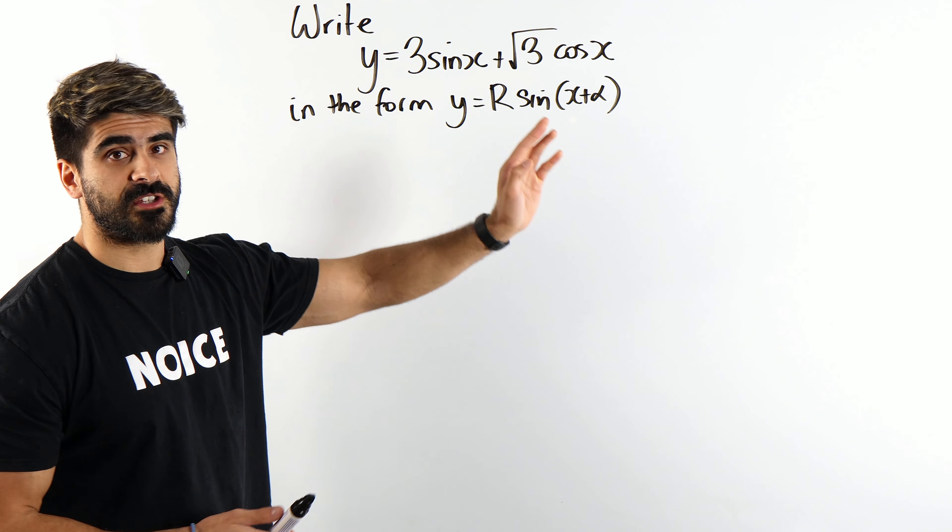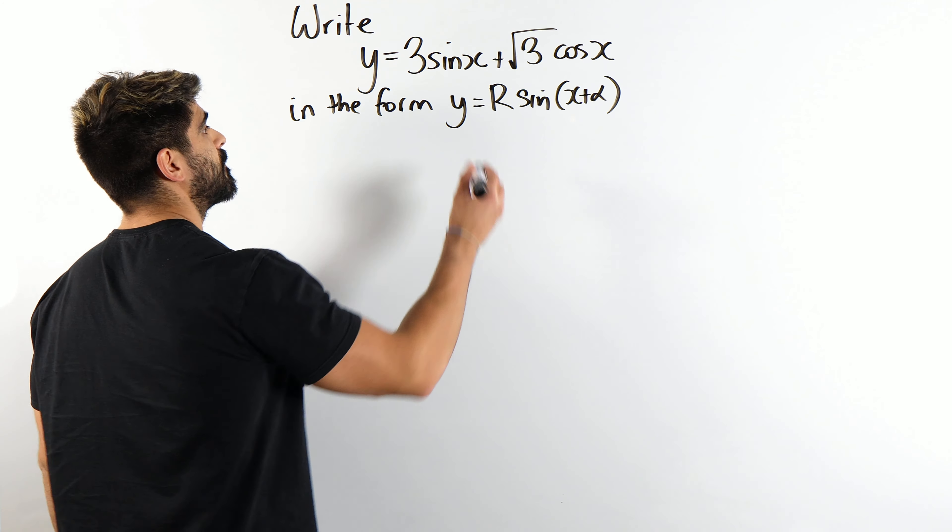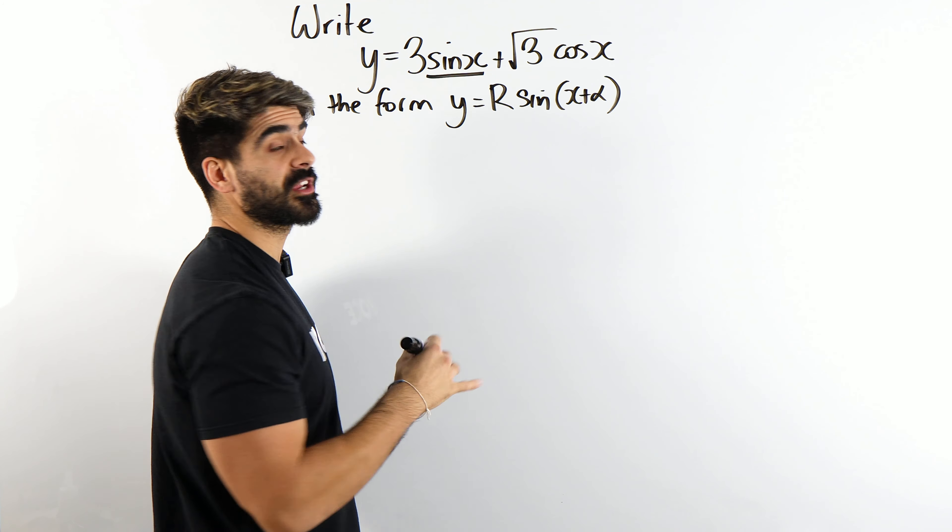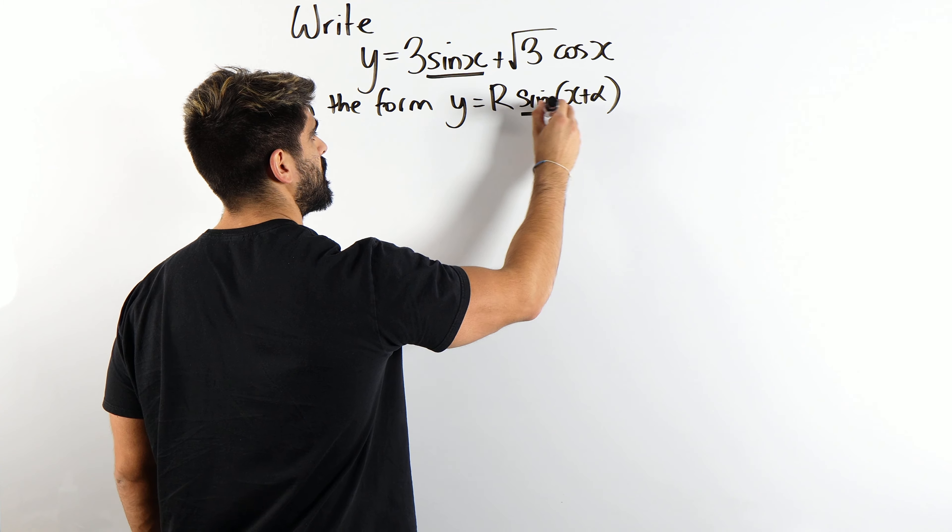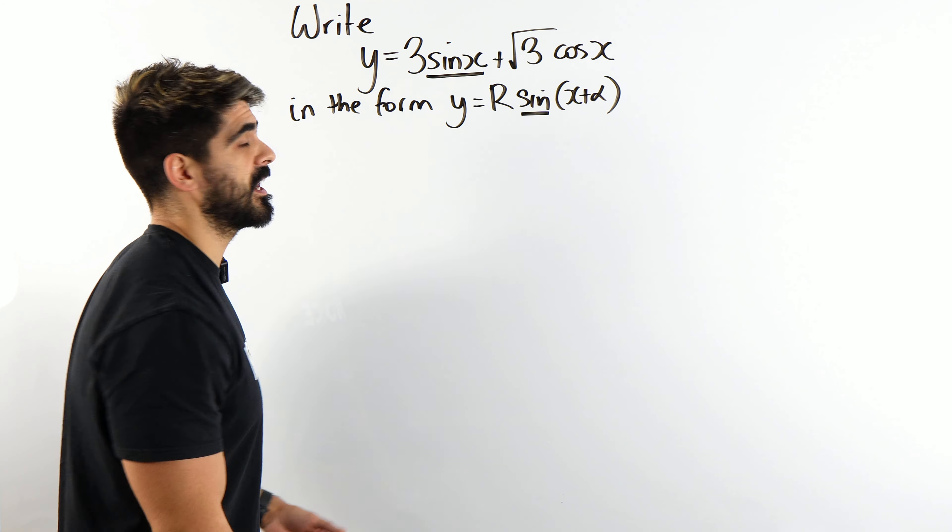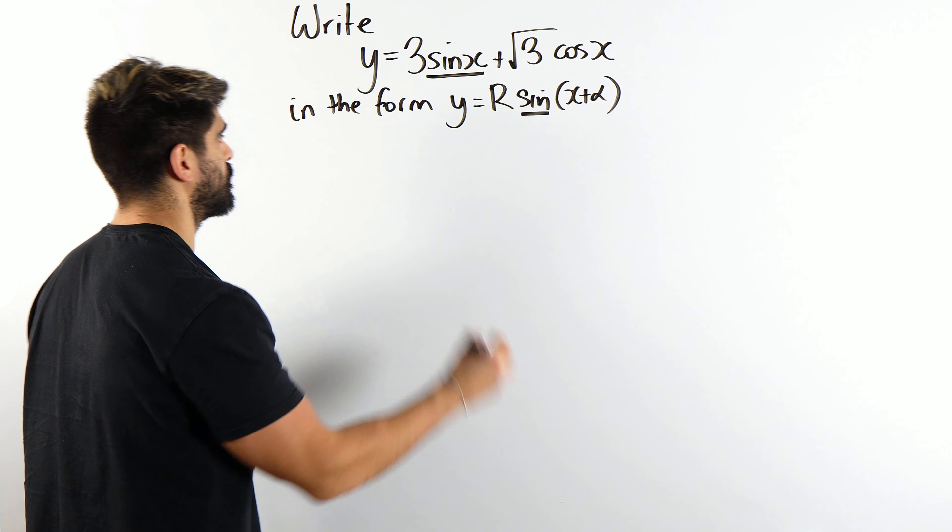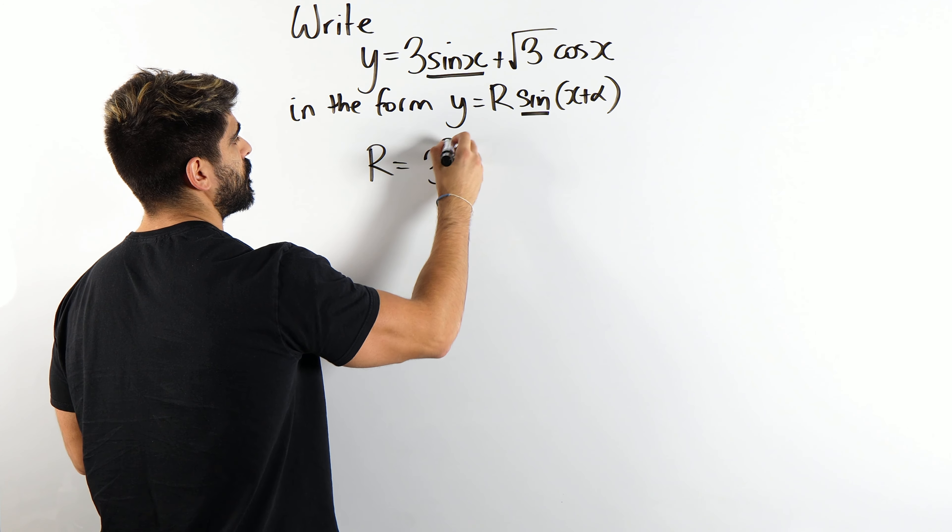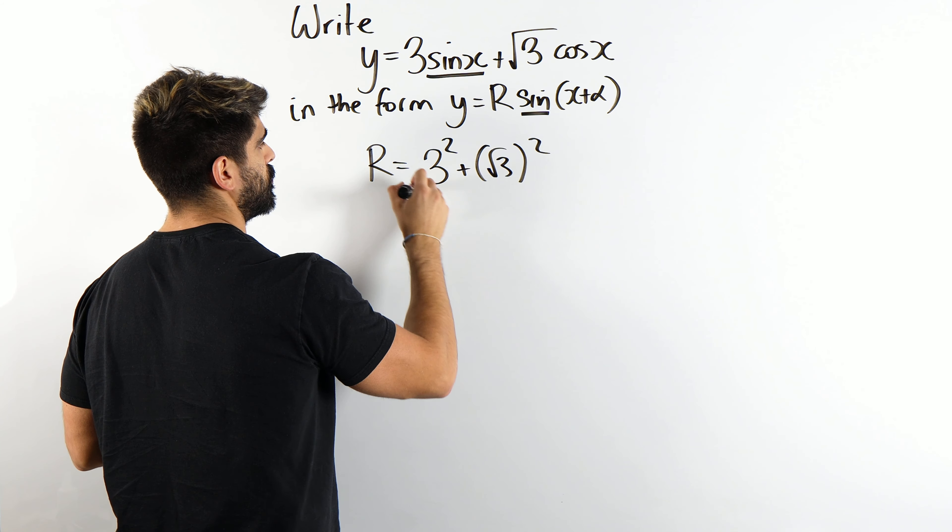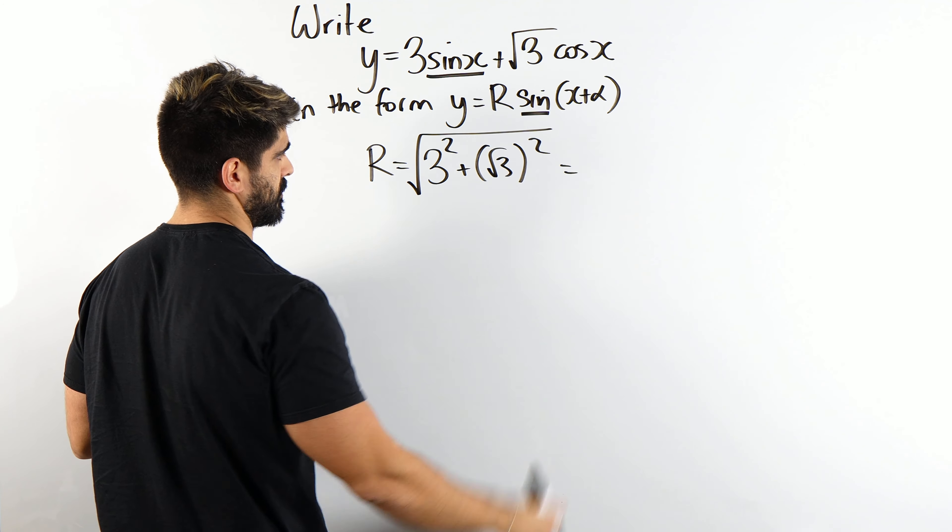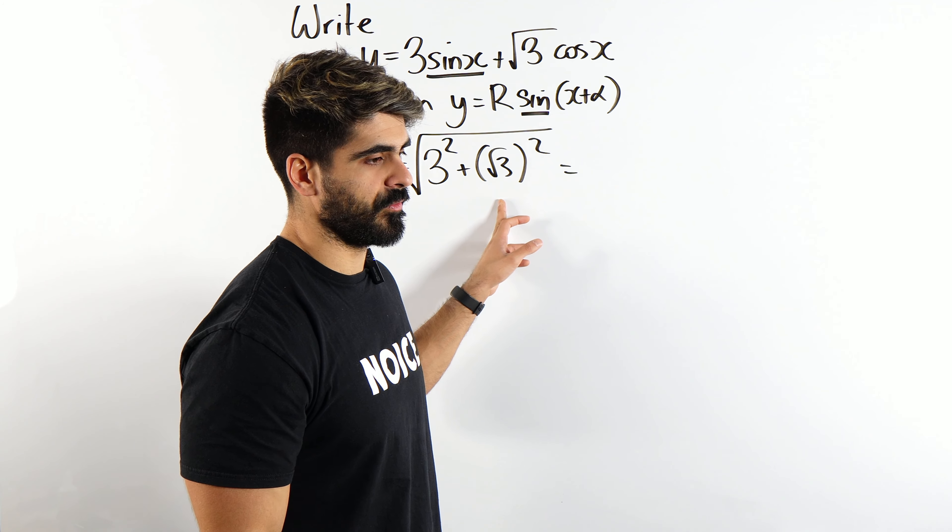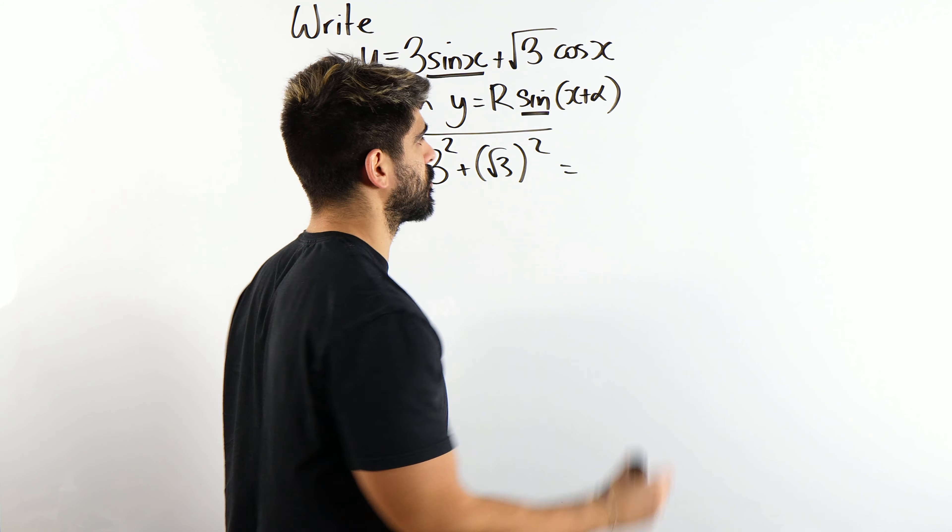Now with all these R transformation stuff, all you do is you check that the first trig function matches the R transformed. Now to find R is super simple. R is the Pythagoras of the coefficients rooted. Well that's Pythagoras isn't it? So that'll be 9 plus 3 which is 12 root of 12 to root 3.